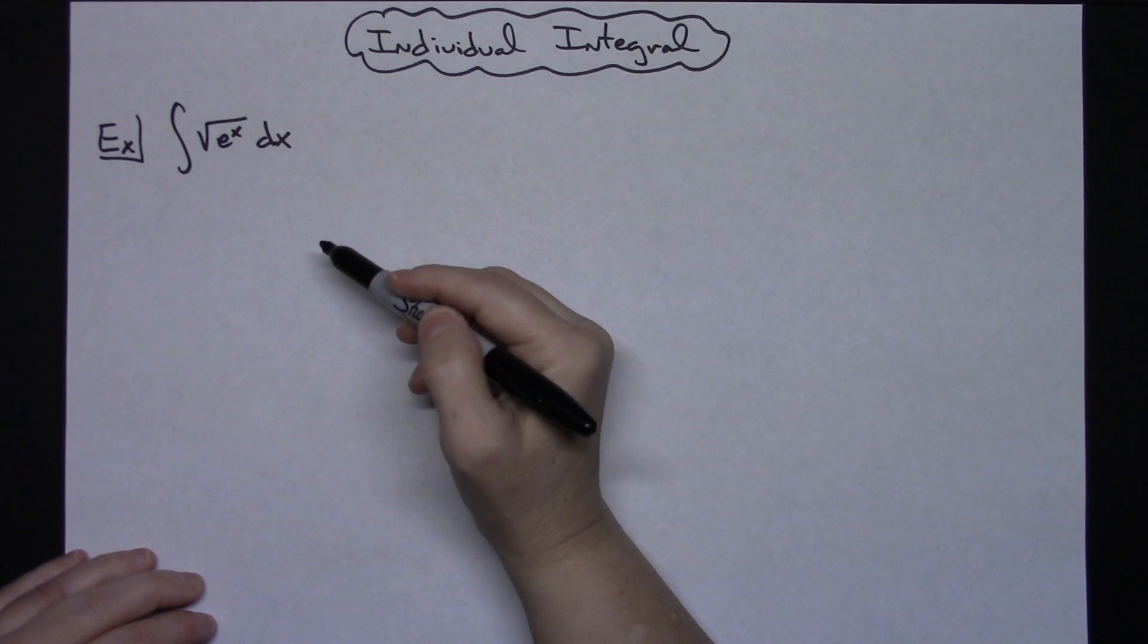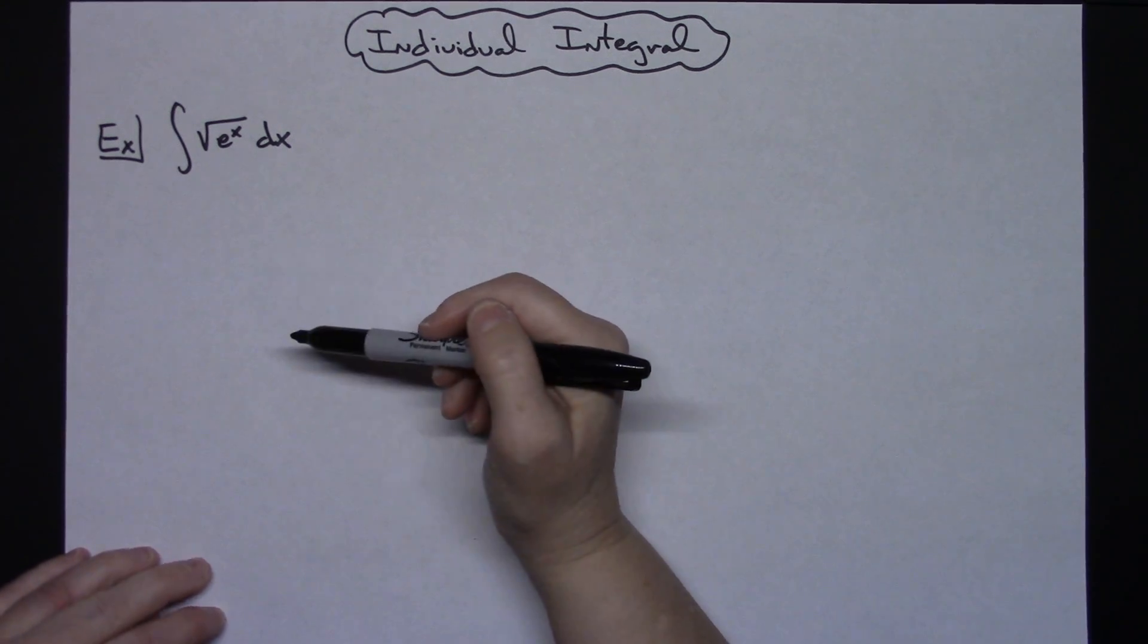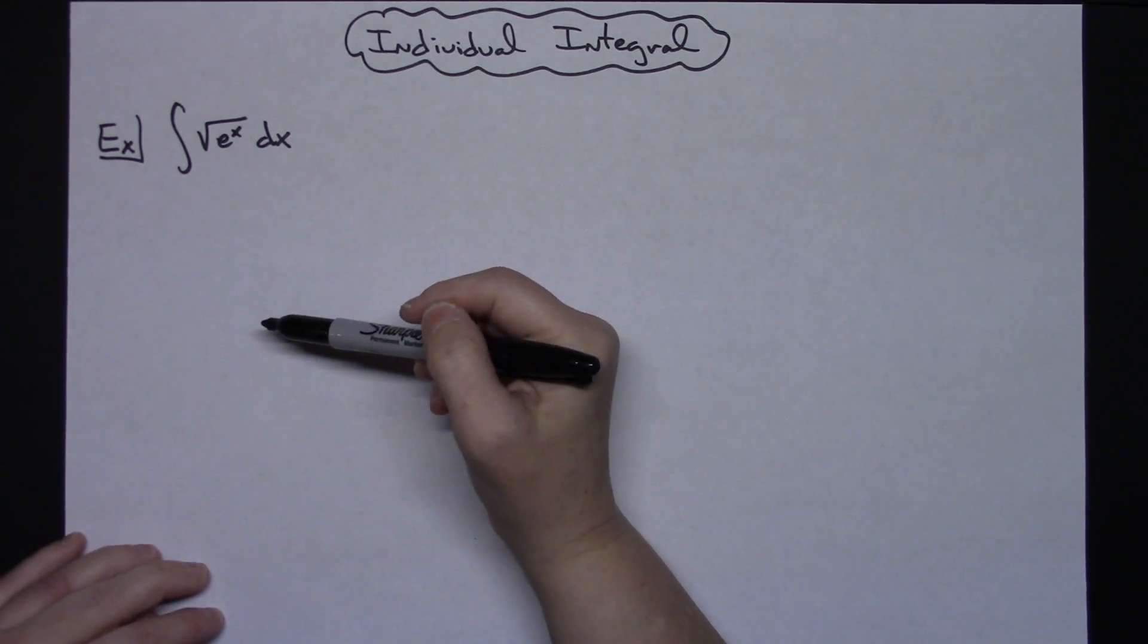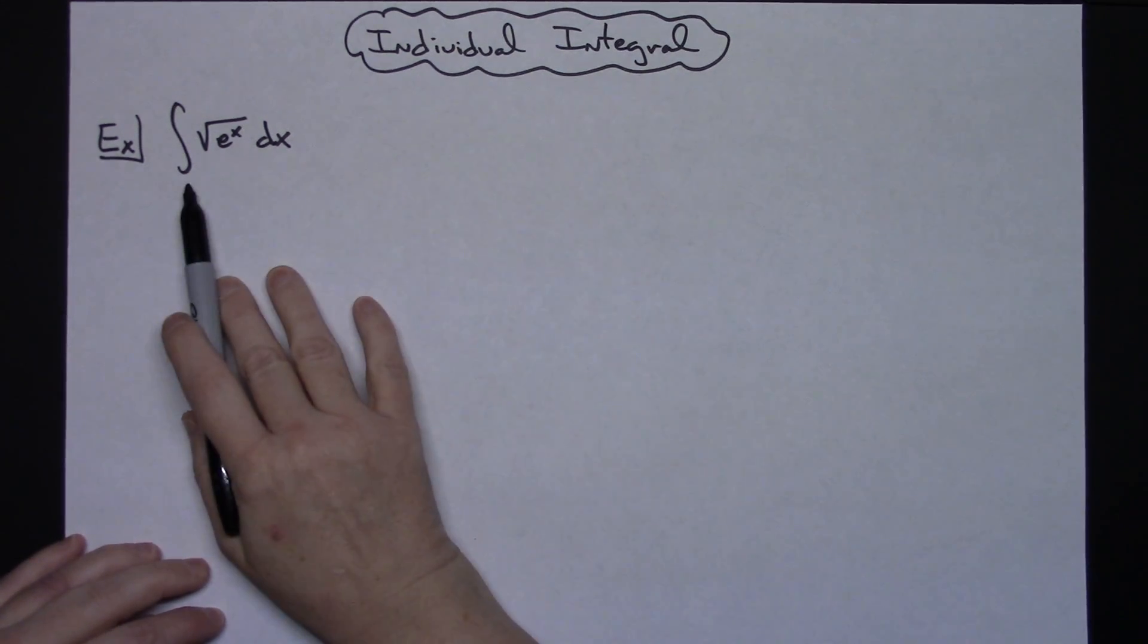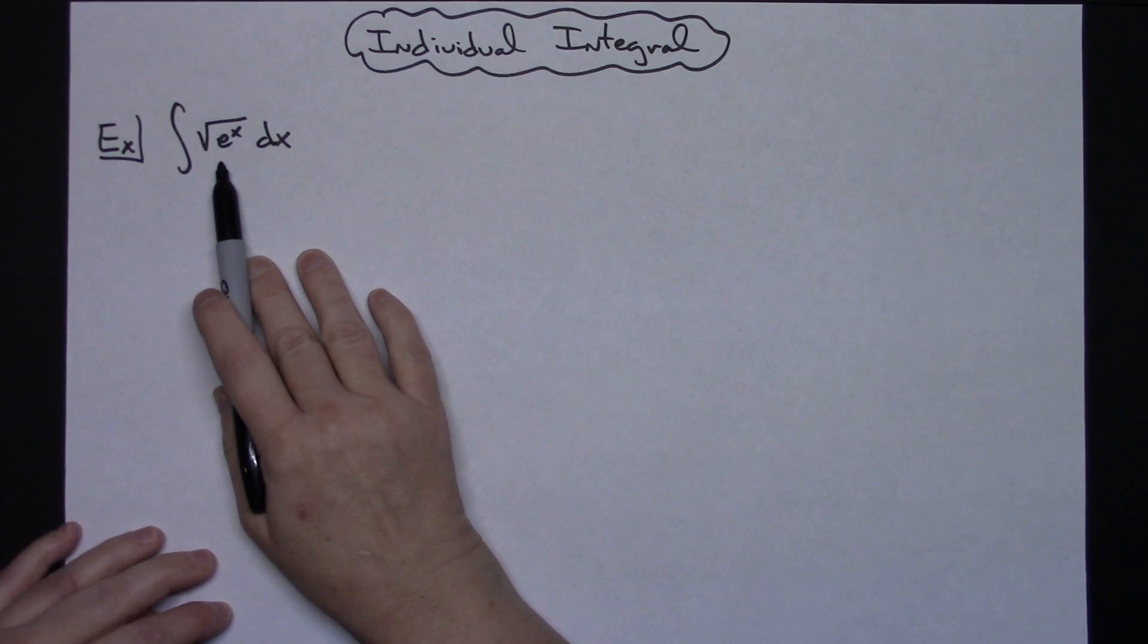In this video I'm going to take a look at just an individual integral. It's going to be a basic u-substitution integral after you recognize what you really need to let u be. So we've got the integral of the square root of e to the x dx.